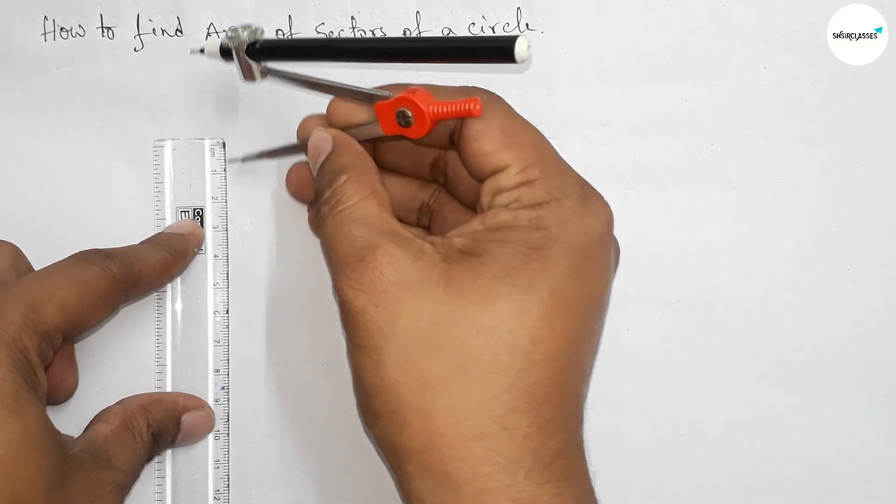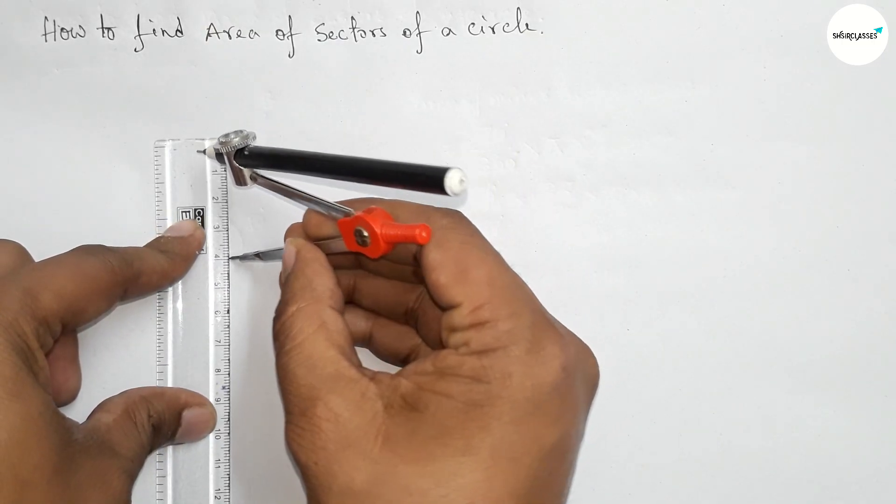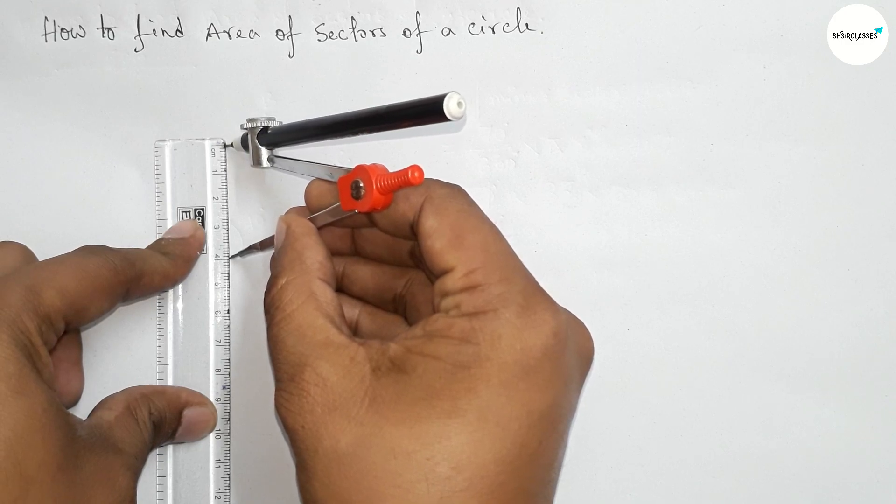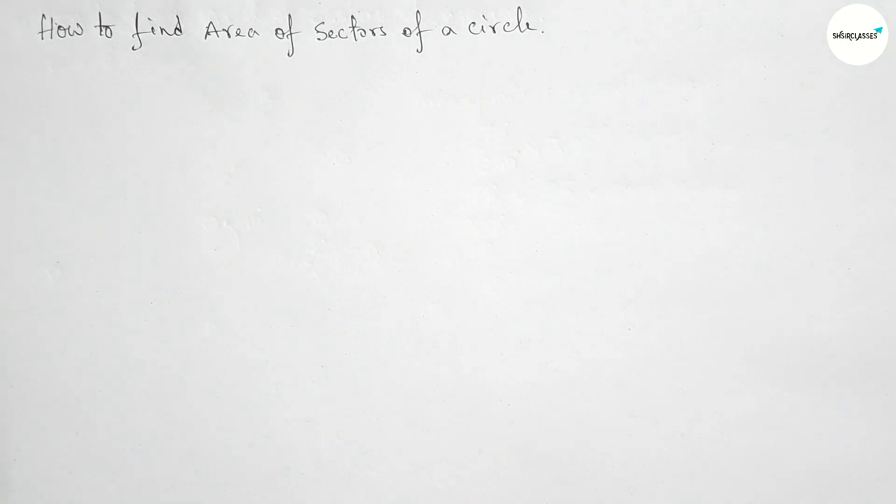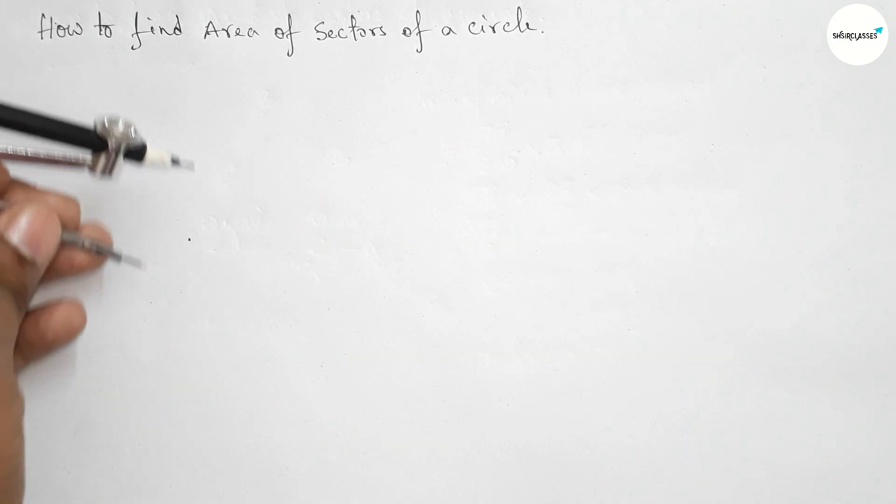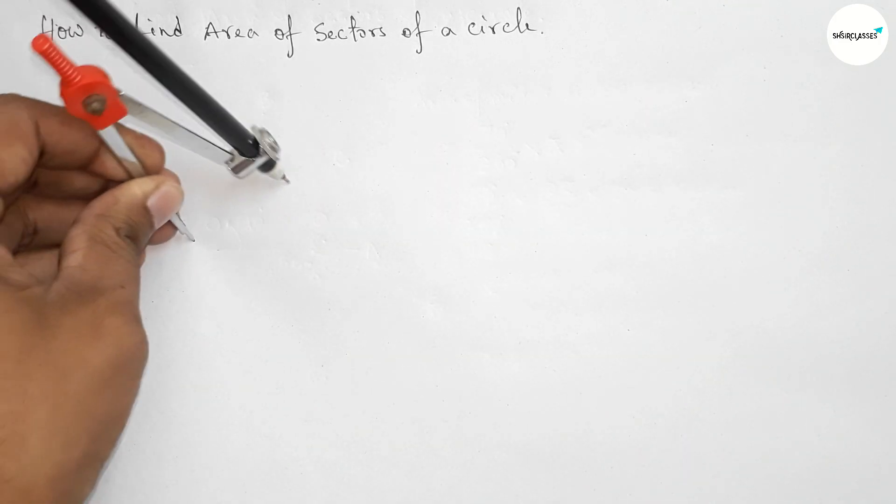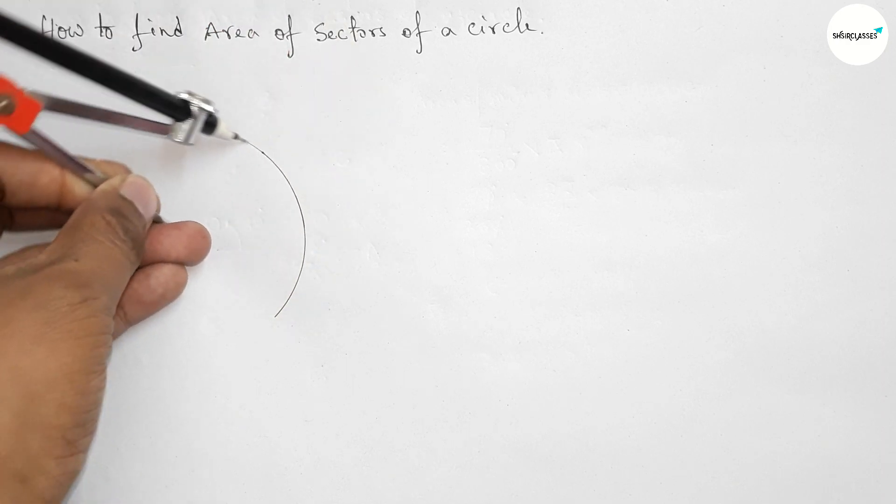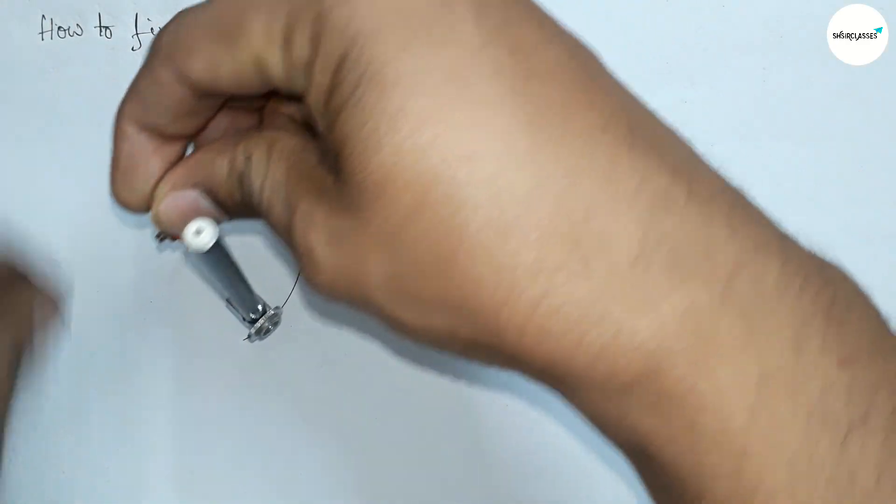First of all, let us take the length of radius of the circle equal to 4 centimeters and take a point as the center. Now put the compass on the center and with radius 4 centimeters, draw a circle.